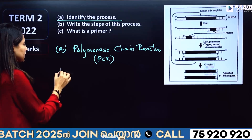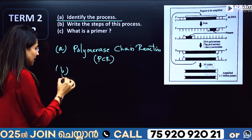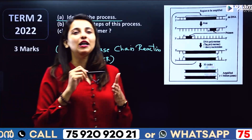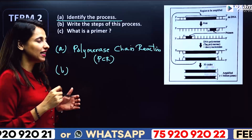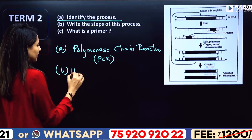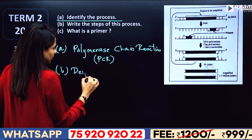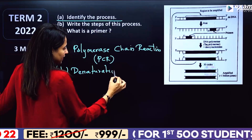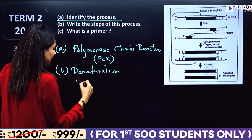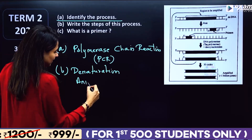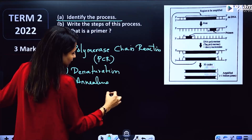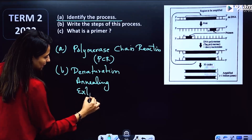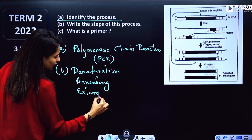Write the steps of this process. There are three main steps. One is denaturation — DNA strands separate. Two is annealing — the primer is attached. Three is extension — we can synthesize DNA fragments.